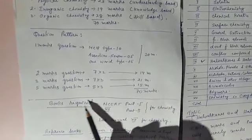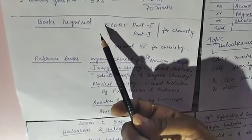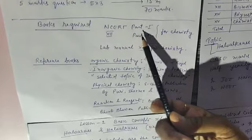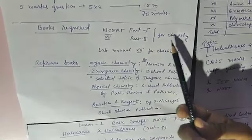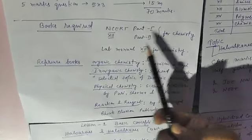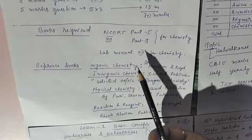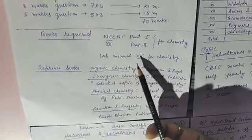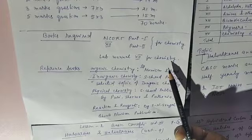The books required for class 12 chemistry are: the main basic books are NCERT Part 1 and Part 2 for chemistry for class 12. There should also be one lab manual of class 12 for chemistry practical.